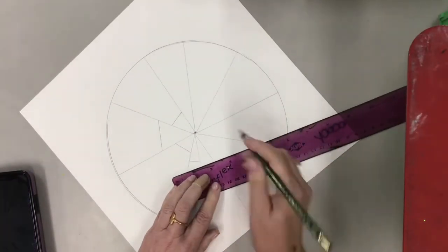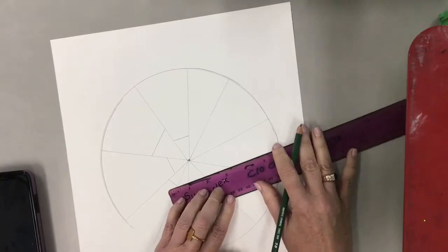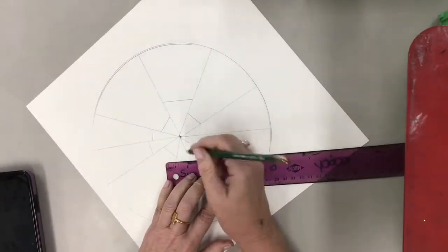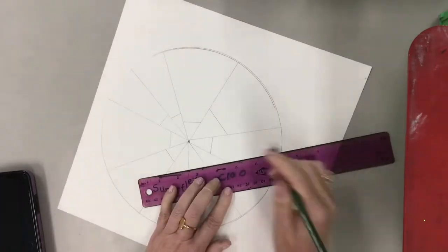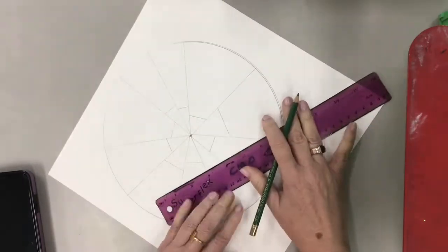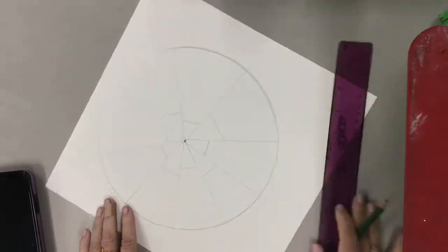So each of these pie pieces is gonna be turned into a building and you're gonna see how we're gonna do that in just a moment. All right, so go all the way around your circle. Like I said, you want all these buildings to be a little bit different so they're more interesting. So some are short, some are tall.